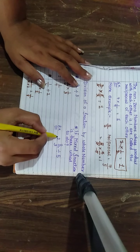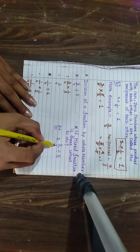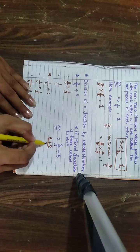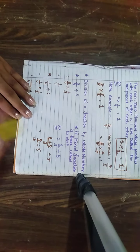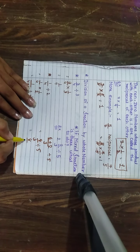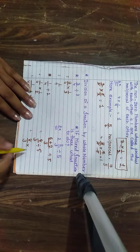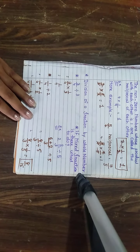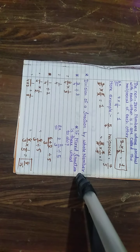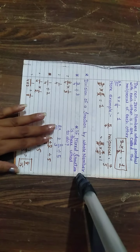First, convert the mixed fraction into an improper fraction: 3×2=6, plus 2, gives 8/3. So the question becomes 8/3 divided by 5. Now convert division to multiplication — 5 becomes 1/5. So 8 × 1/5 × 1/3 = 8/15. Whenever a mixed fraction question comes, don't be scared — just convert it into simple form first.